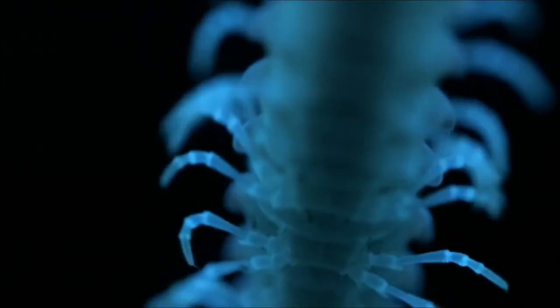Rather than luring prey in, other bioluminescent creatures, like this millipede in the Sierra Nevadas, use light as high-voltage signs to keep predators out. The bugs are laced with cyanide. Their nuclear glow alerts potential predators to leave them alone.